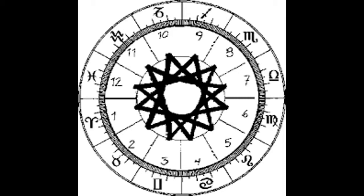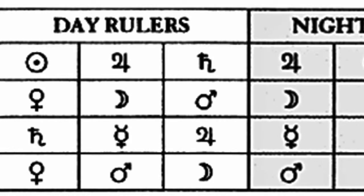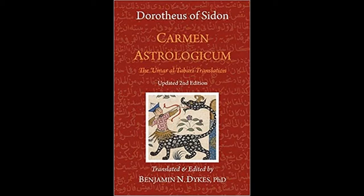Each group of triplicities has its own set of planetary rulers. Lily used to mention two for each triplicity, a day ruler and a night ruler. But originally there were three rulers for each sect. The list of triplicity rulers given by Dariot in the 17th century is a more faithful reproduction of the earlier scheme used by Valens, Vettius and Dorotheus in the classical period.